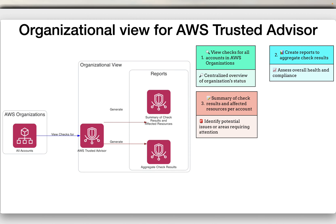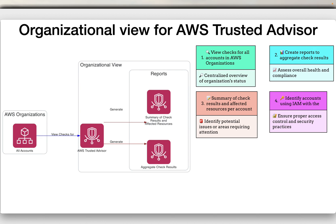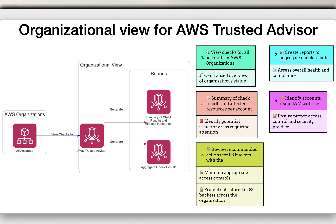The generated reports include a summary of check results and information about affected resources for each individual account, allowing you to quickly identify potential issues. You can determine which accounts are properly utilizing IAM using the IAM use check, and review recommended actions for S3 buckets using the Amazon S3 bucket permissions check — ensuring proper access controls and security best practices across your organization.